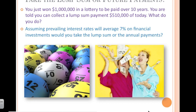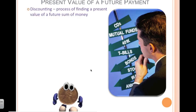I have a question for you. You just won a million dollars in a lottery, and it's going to give you a million bucks in 10 years. You're told you can take a lump sum payment today of $510,000, or just take the money in 10 years. What should you do? We're going to assume prevailing interest rates will average 7% over the next 10 years. The answer can be expressed mathematically using what's called the present value of a future payment — a method called discounting.